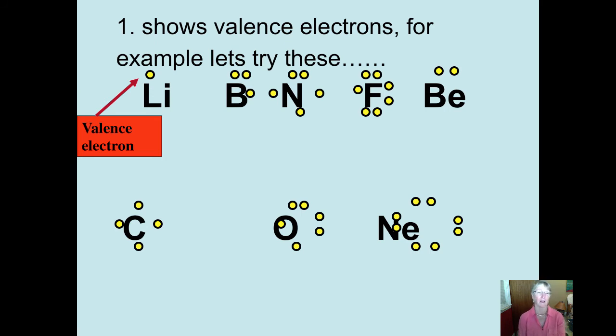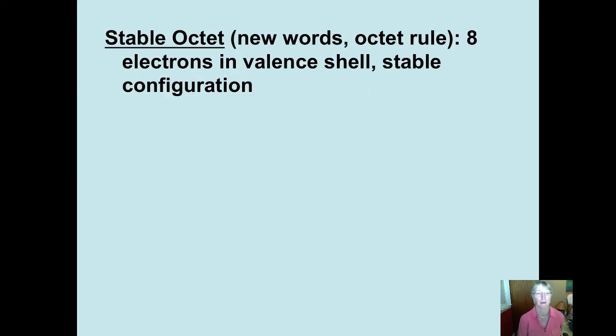So those are what we call electron dot structures. They're very simple to do. Look at the column the element is in. On the Roman numerals 1 through 8a, the number of dots you put around them is equal to the number at the top of the column. Okay. Now, elements are always trying to achieve a stable octet, and the rule we're going to use now for that is called the octet rule.